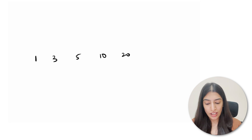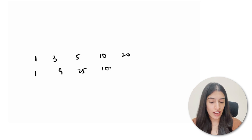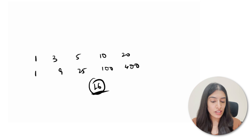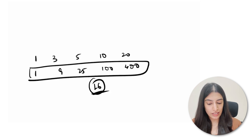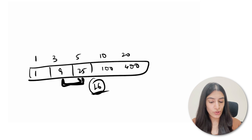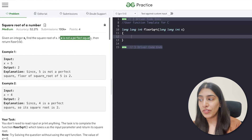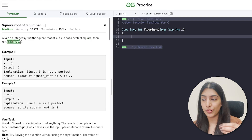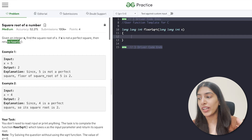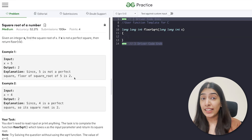Suppose we have numbers 1, 3, 5, 10, 20 — their squares are 1, 9, 25, 100, 400. Suppose we have to find the square root of 16. You know that 16 is between 9 and 25, so the square root is also going to be between 3 and 5. You can use binary search to find where exactly your square root lands. The question also says that if x is not a perfect square, you have to return the floor of root x — so for sqrt(20) you would return 4.